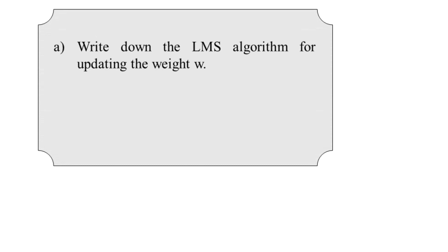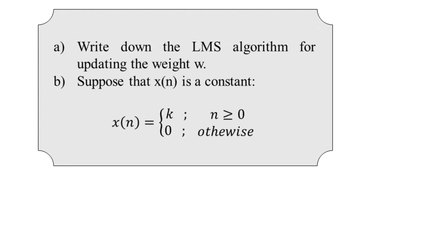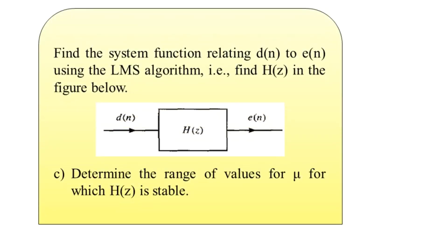In part a, we are asked to write down the LMS algorithm to update the weight denoted by w. In part b, x(n) is a constant: x(n) equals capital K for n greater than or equal to zero, otherwise x(n) equals zero. We have to find the system function H(z) relating d(n) to e(n) using the LMS algorithm. In part c, we must determine the range of values for mu for which H(z) is stable.